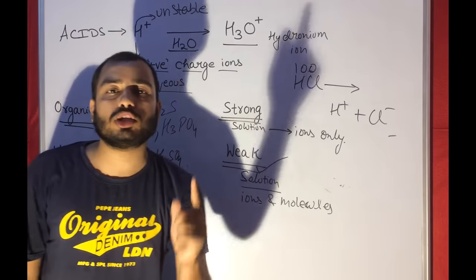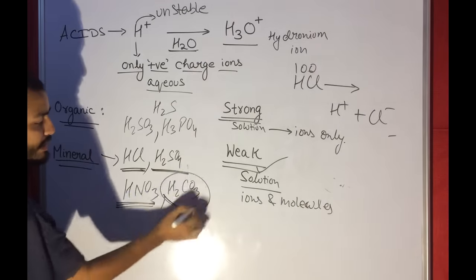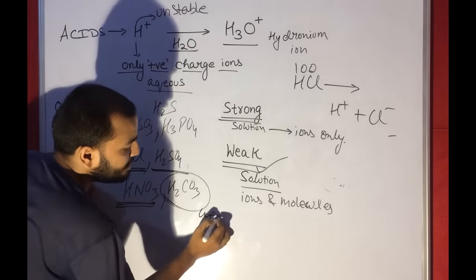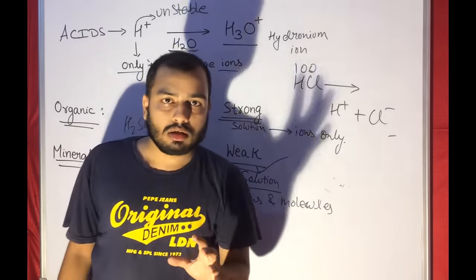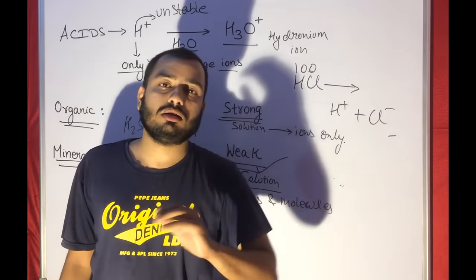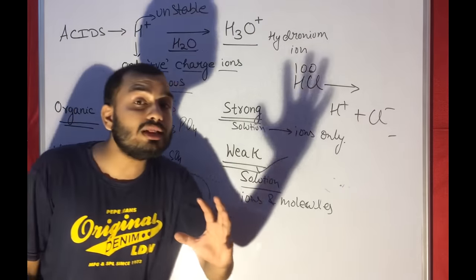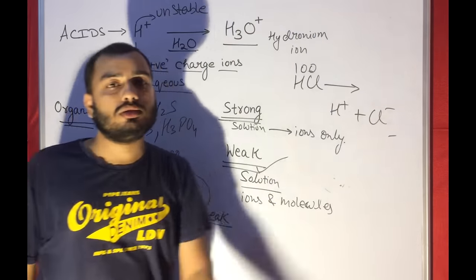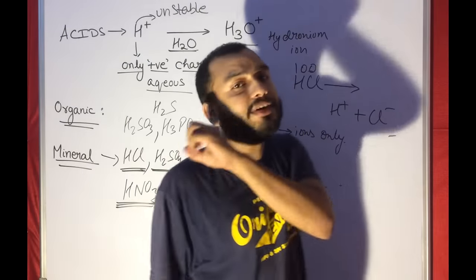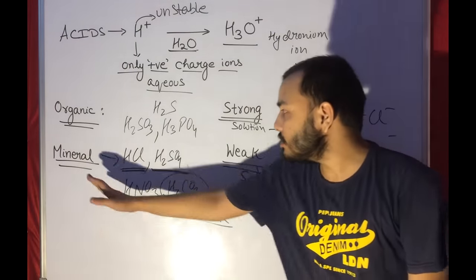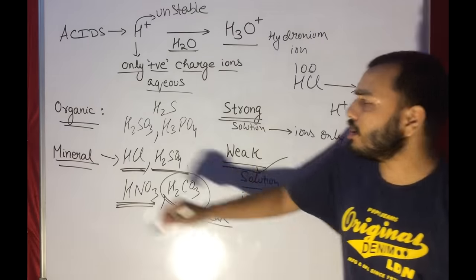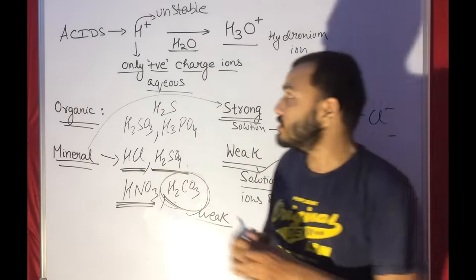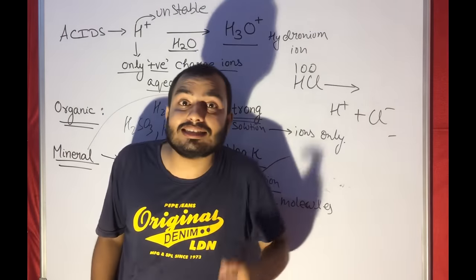One very important question: carbonic acid H2CO3 is a mineral acid but still it is a weak acid. So there is a question — a mineral acid which is weak: carbonic acid. What will a solution of carbonic acid contain? Ions and molecules. What will a solution of nitric acid contain? Nitric acid is mineral and strong, so ions only. All mineral acids are strong except carbonic acid.